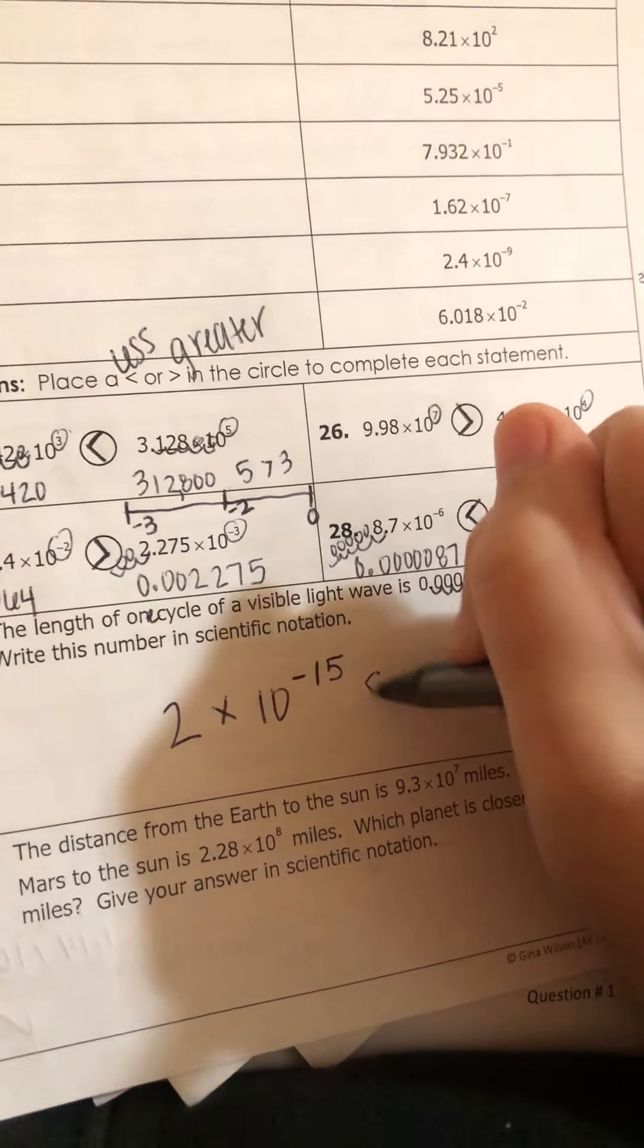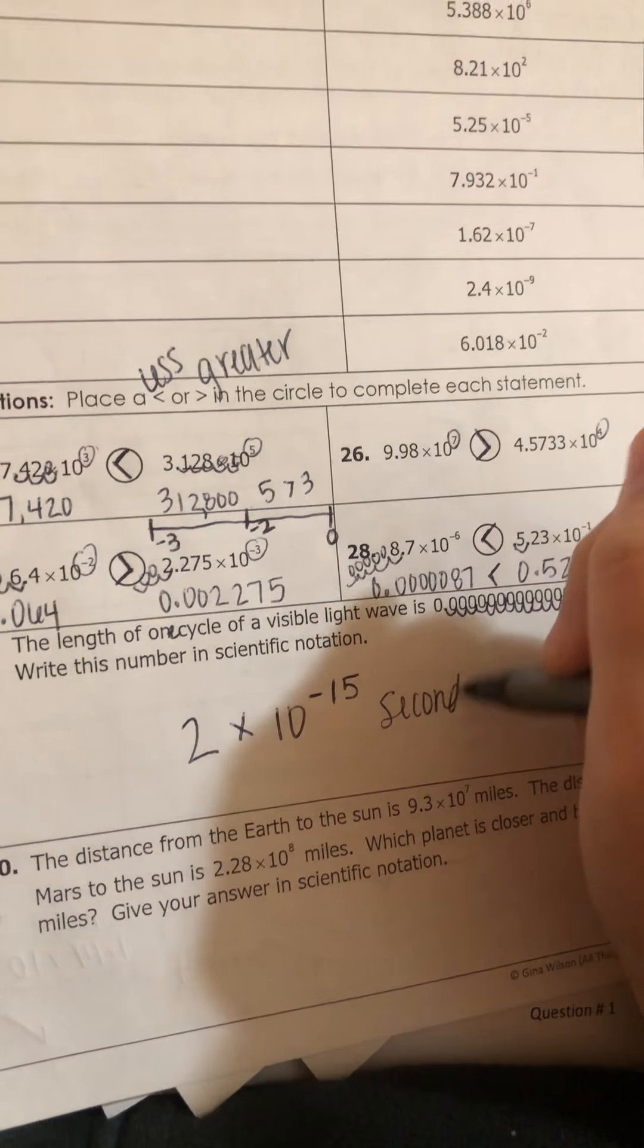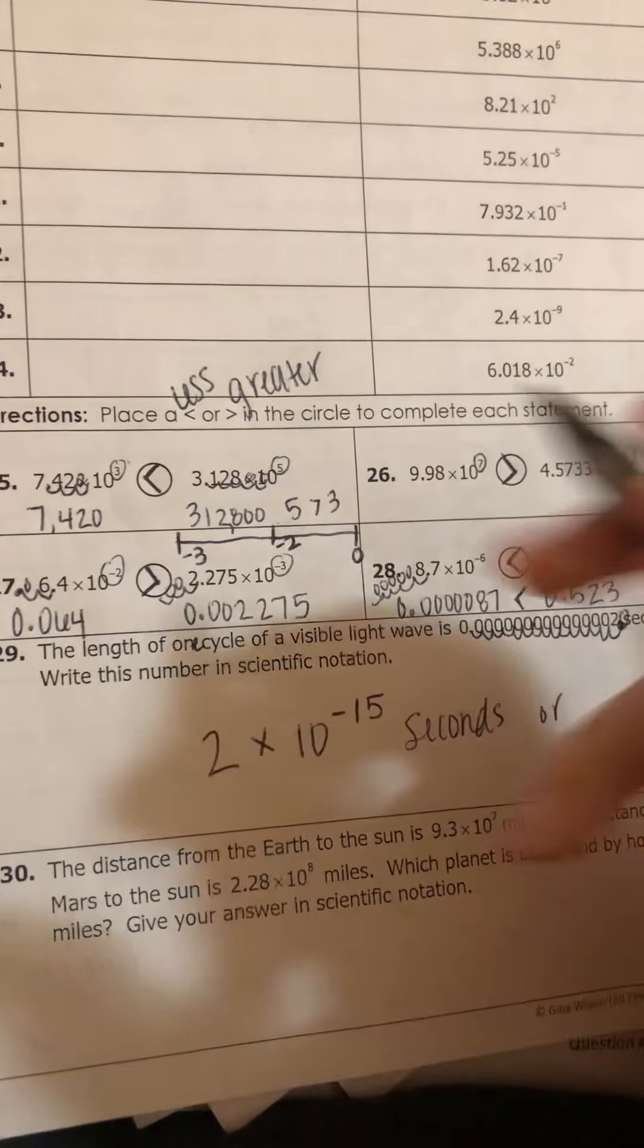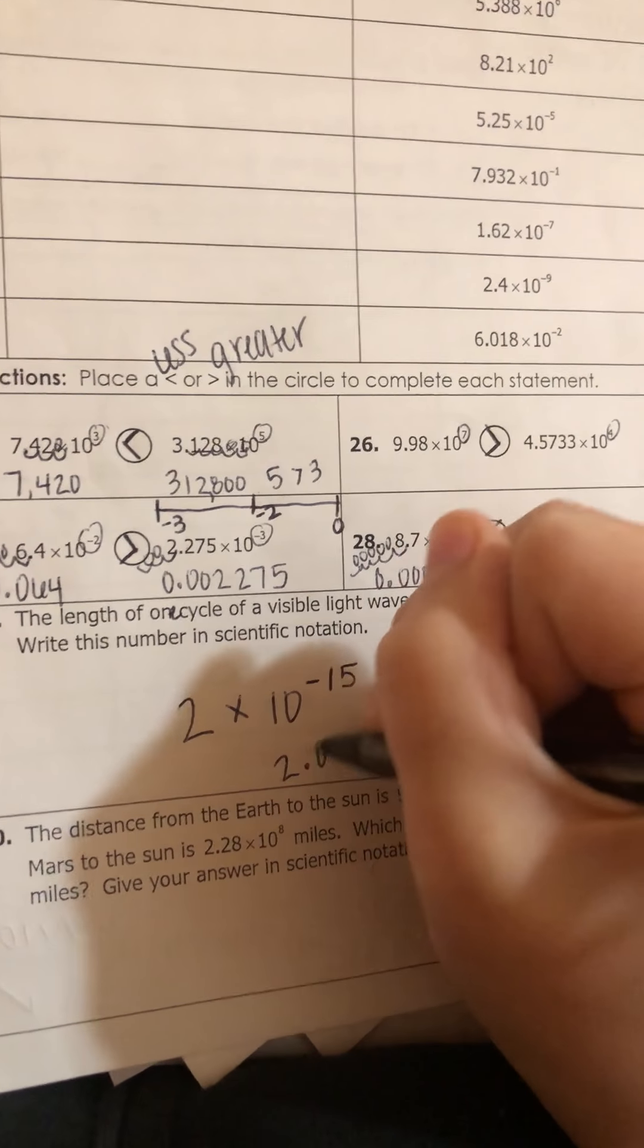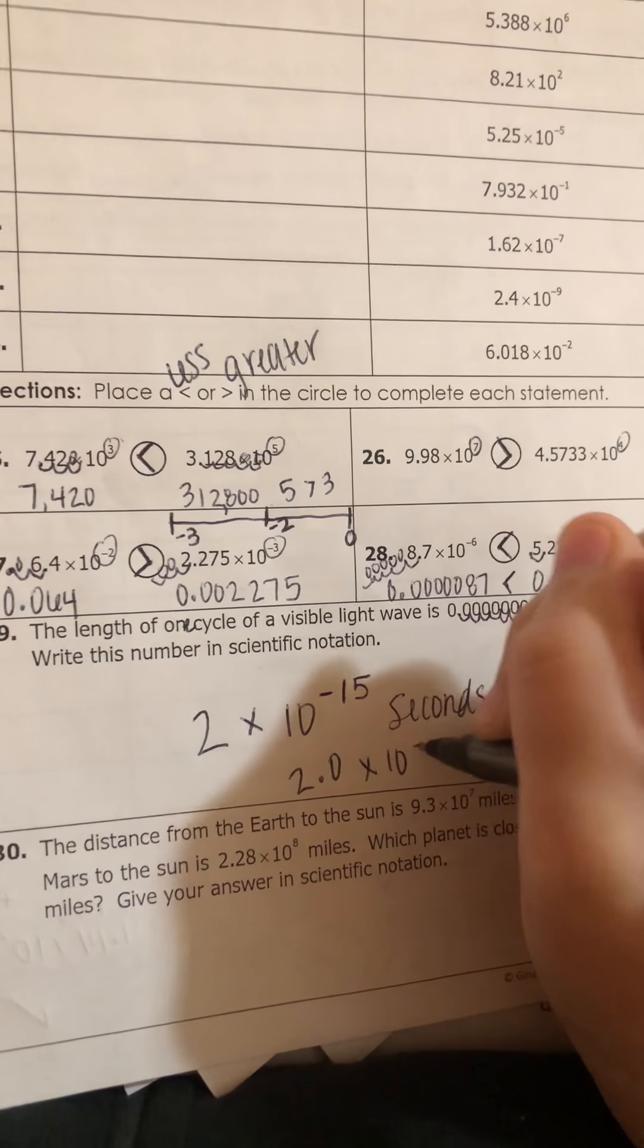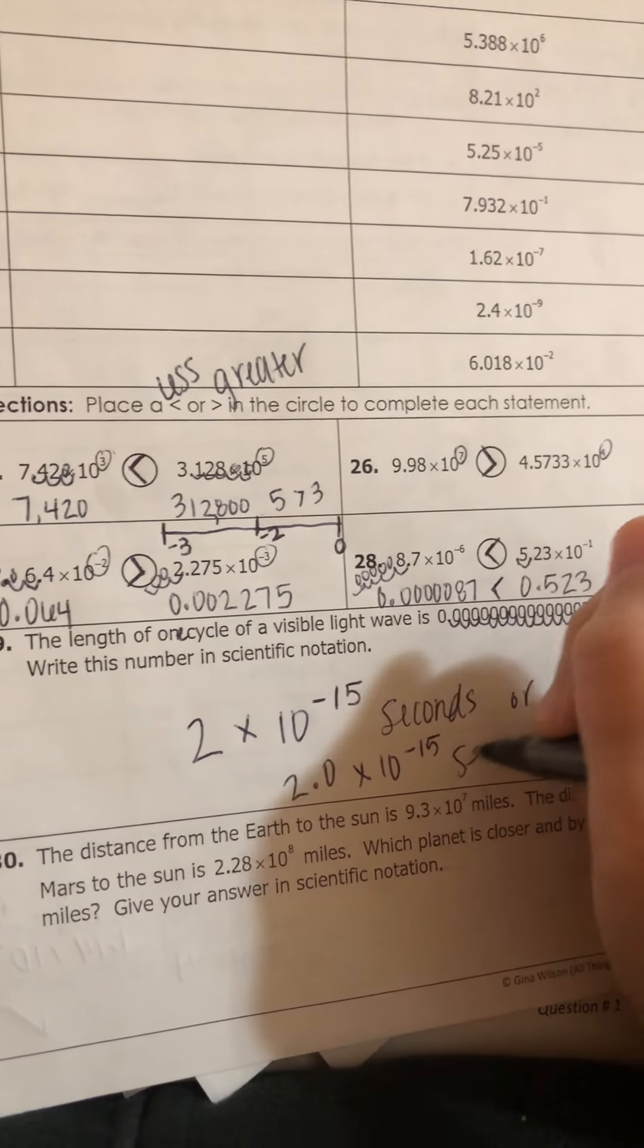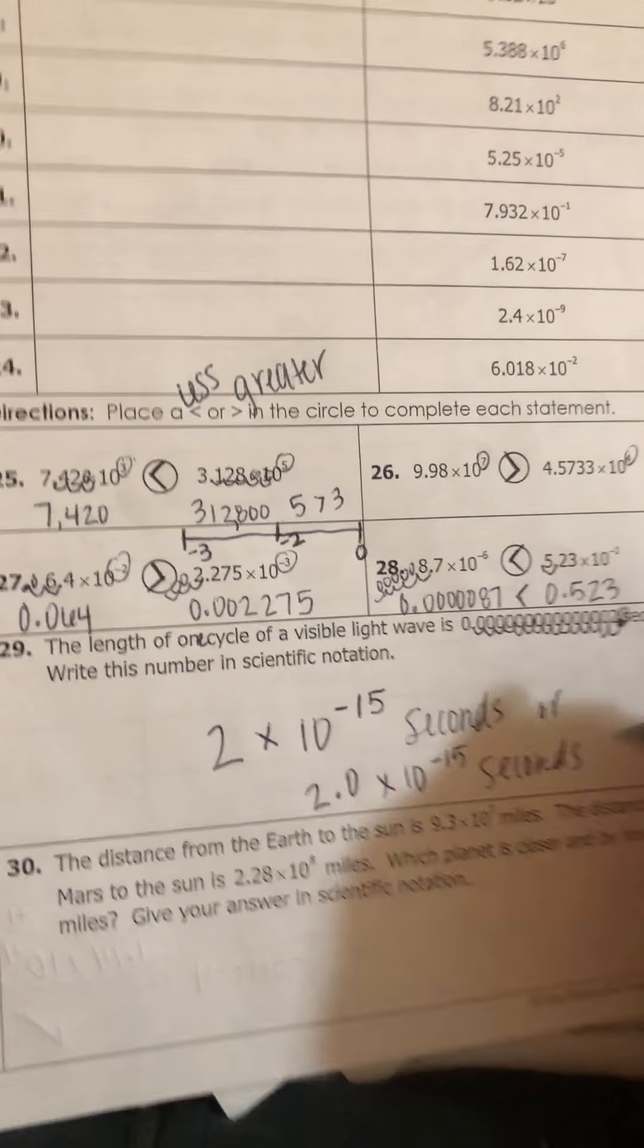And then our label is seconds. If you want to write it as 2.0 times 10 to the negative 15 seconds, you can do that as well. Those are the same value and it doesn't really matter.